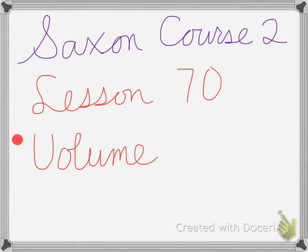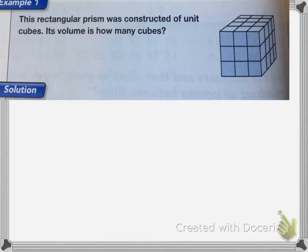Saxon Course 2 Lesson 70 is on volume. Here I have a rectangular prism constructed of unit cubes. The volume is how many cubes. To find the volume of the prism, we calculate the number of cubes it contains.